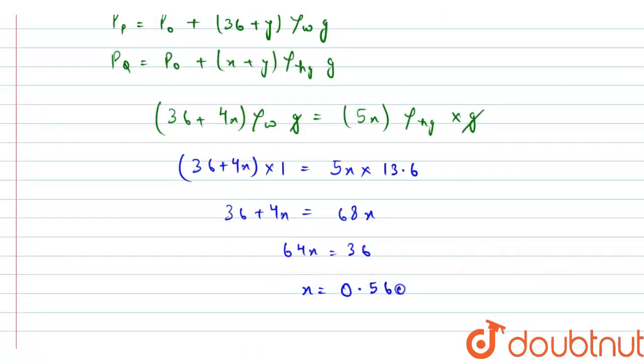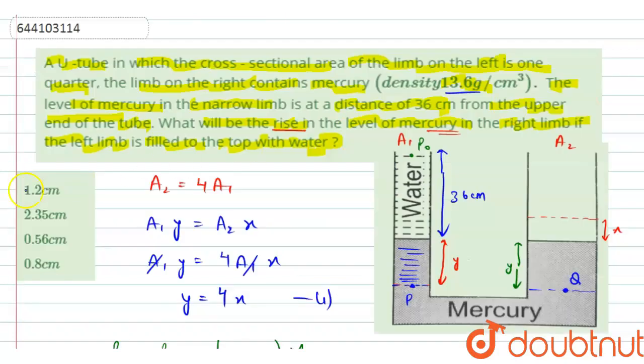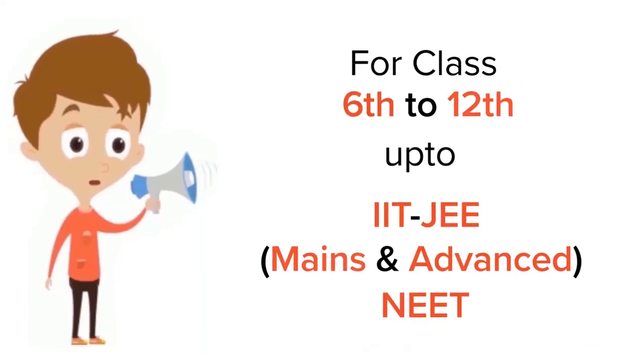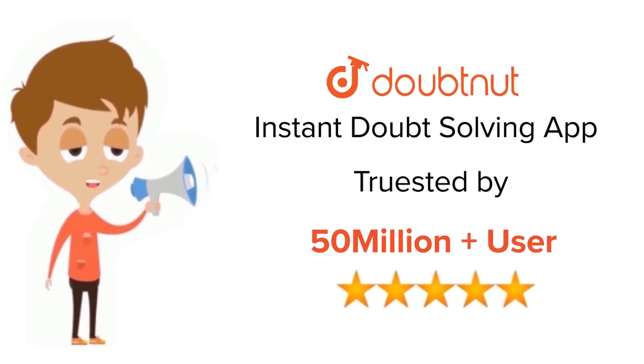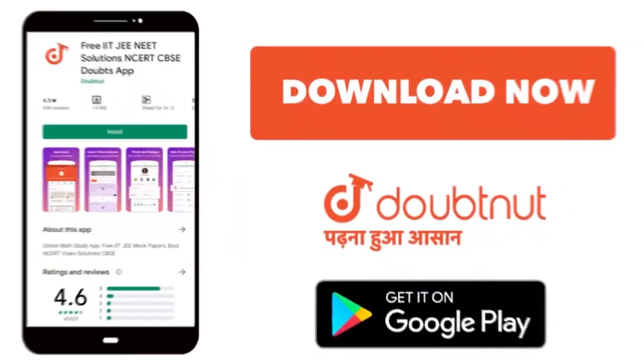And on solving this, we will get x equals to 0.56 centimeter. So this will be the rise in the level of the mercury in the right limb. So from the given options A, B, C, and D, option C will be the correct answer. Thank you.